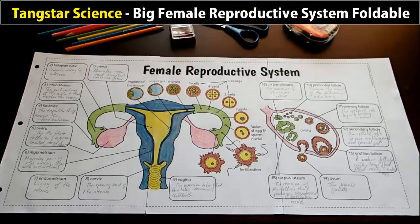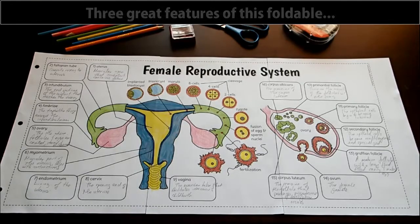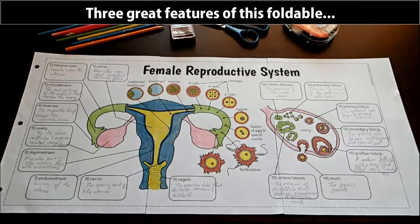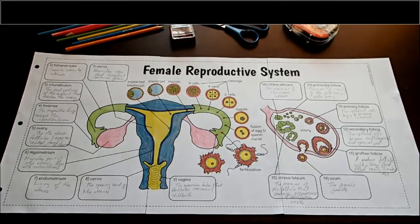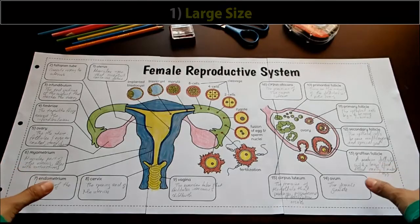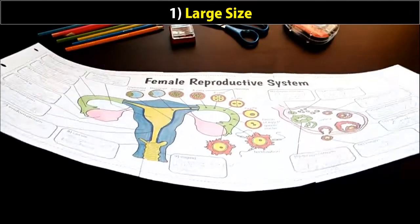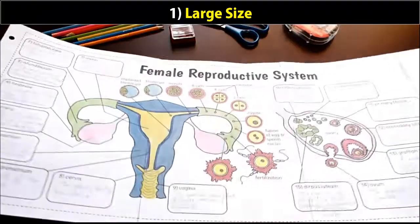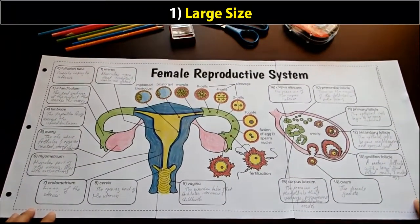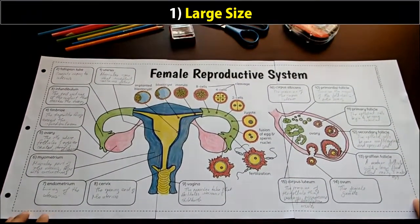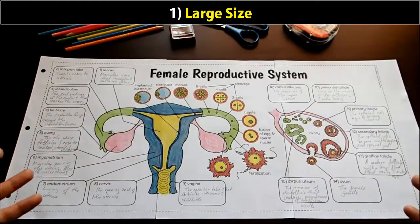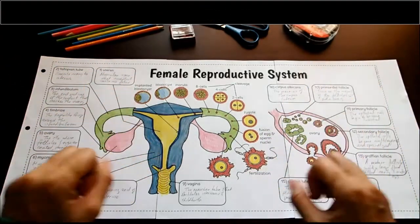This is the Tangstar Science Big Female Reproductive System Foldable for Interactive Notebooks or Binders. I want to highlight the three awesome features of this foldable that make it really unique and great for any lesson on the female reproductive system. First of all is its size — it is large, and when I say large I mean three pages taped together. This is perfect to create a large format where all of the information can be put in one place.